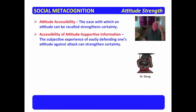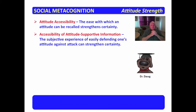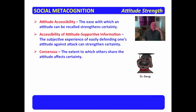Is it right on the top of my head or buried deep? Accessibility of attitude-supportive information refers to the subjective experience of easily defending one's attitude against challenge from others. If it's easy to reach and I've been able to defend it against discussion or attack from others, then I'm more certain the attitude is correct. Consensus is the extent to which others share the attitude, and that certainly affects my certainty.